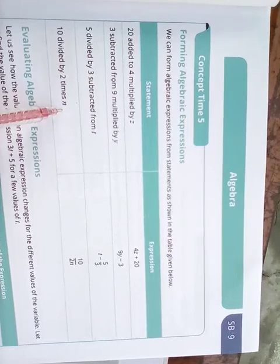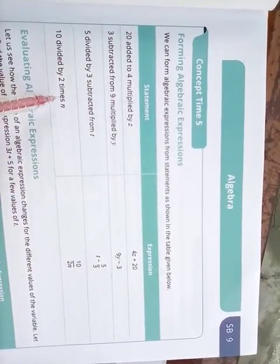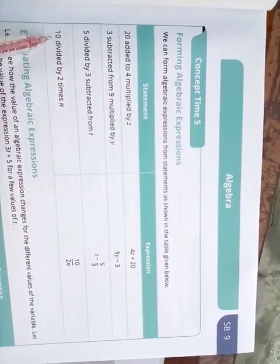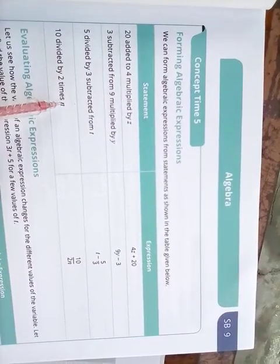20 divided by 2 times n. What do we do? 2 times n means 2 multiplied by n, we get 2n. 20 is divided by 2n, so the answer will be 10 upon 2n. Clear?